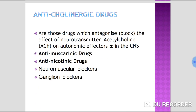Anticholinergic drugs are those drugs which antagonize or block the effects of the neurotransmitter acetylcholine on autonomic effectors and in the CNS — specifically on muscarinic or nicotinic receptors. On the basis of receptors, we classify anticholinergic drugs into anti-muscarinic and anti-nicotinic drugs.